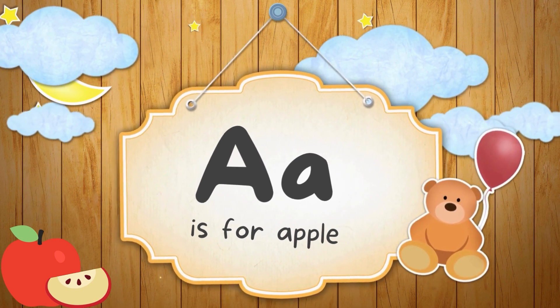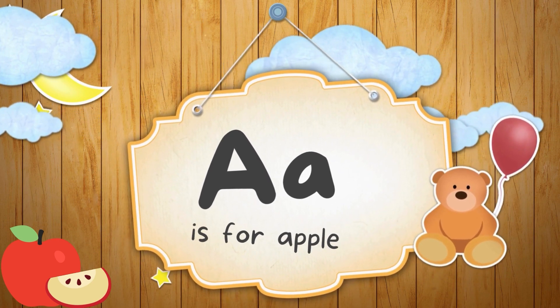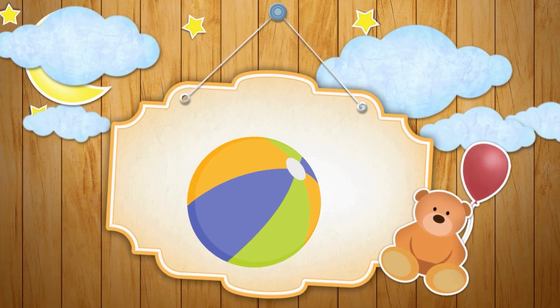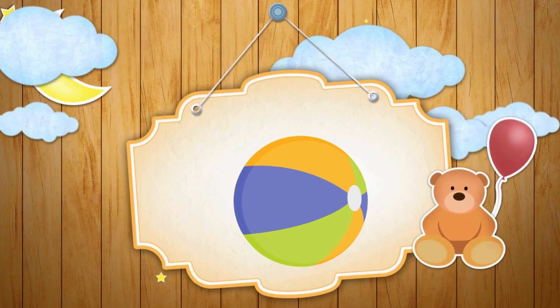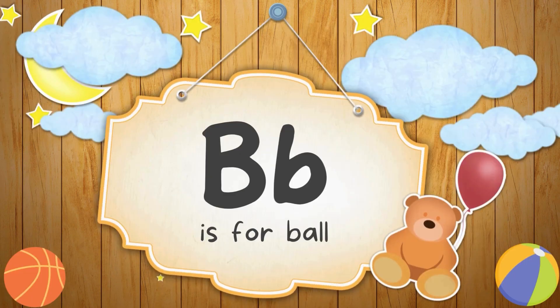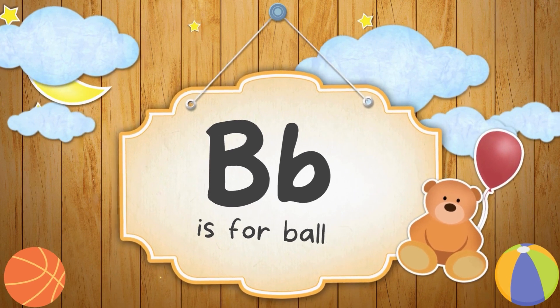A is for Apple. See the image and guess the alphabet. B is for Ball.